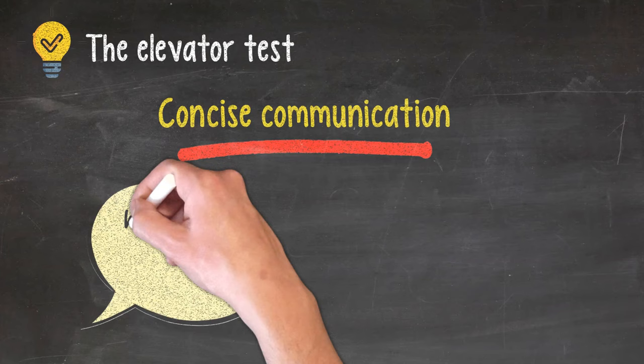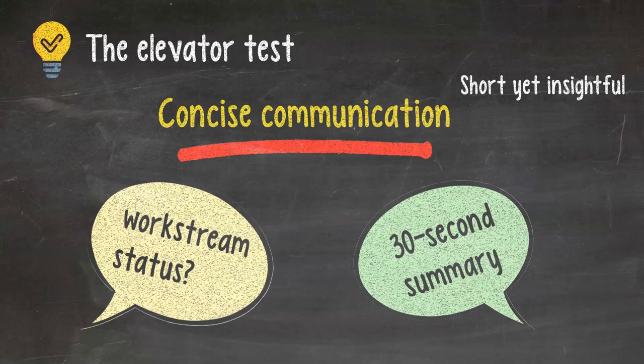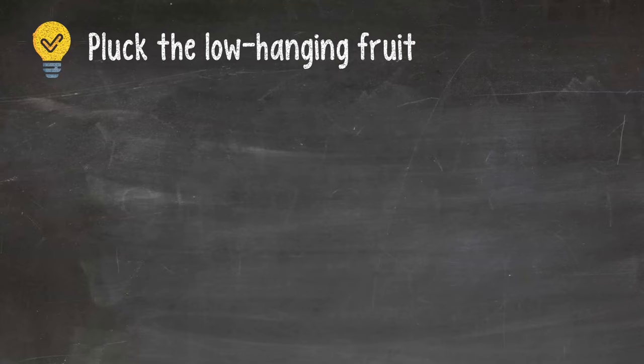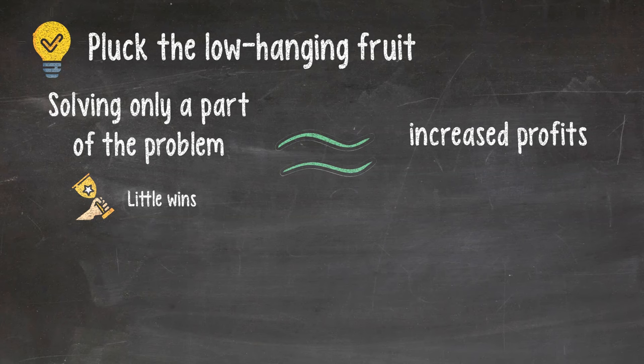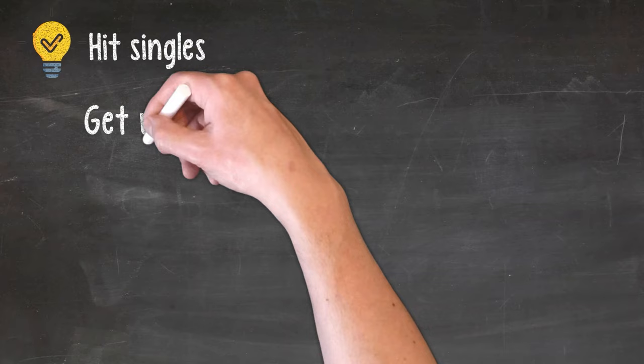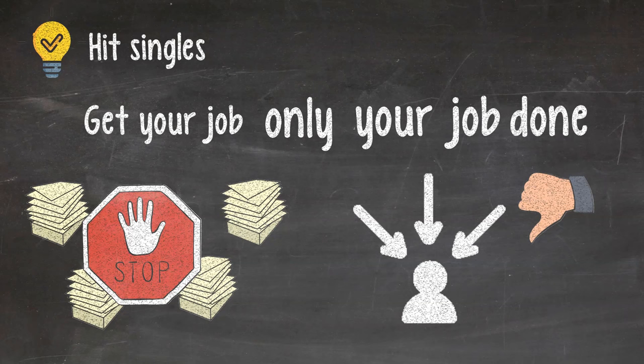Tip 8. The elevator test. Concise communication is crucial in consulting. Anytime the EM asks you for your work stream status, you have to be able to give him a 30-second summary. Short, yet insightful. This skill takes practice. Try doing it every day in various contexts. Tip 9. Pluck the low-hanging fruit. Solving only part of the problem can still mean increased profits. Those little wins help you and your customers. Try to see such opportunities and grab them first. Tip 8. Hit singles. Get your job and only your job done. Don't try to do the work of the whole team. It's impossible to do everything yourself all the time. Even if you manage to pull it off once, you raise unrealistic expectations, and once you fail, it's difficult to gain back your credibility.